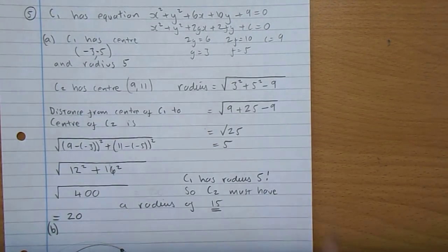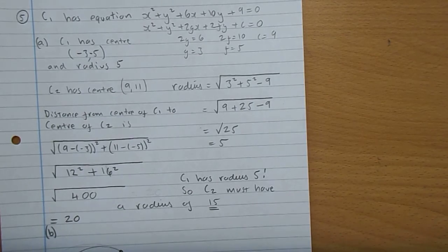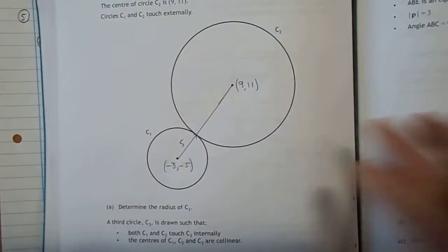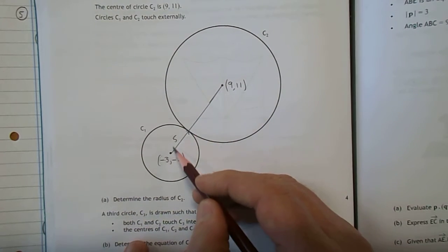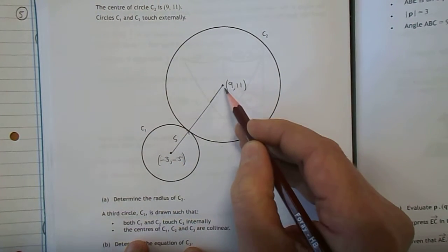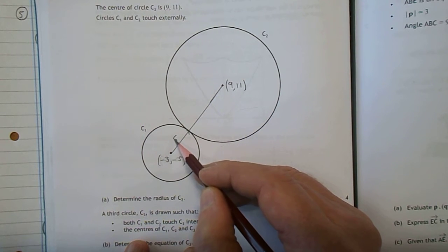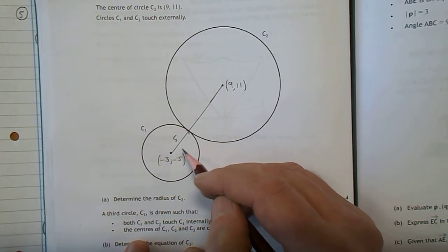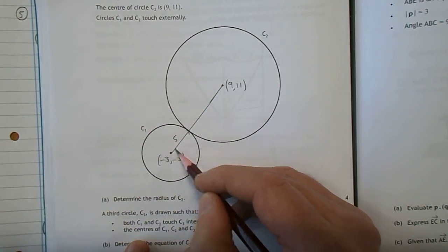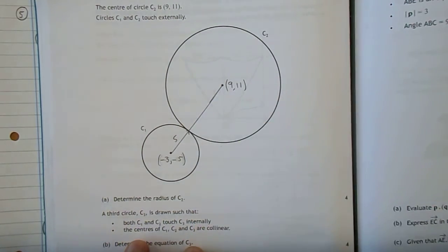Now, C2 has centre 9, 11. If I just go back to the original diagram, I'm sure the SQA won't mind. There we have minus 3 minus 5 up to 9, 11. What's the distance there? I've written in the radius of circle C1, so we want the distance from that coordinate to that coordinate there.